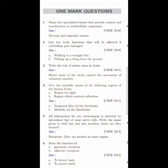Write the role of motor areas in the brain. Motor areas of the brain control the movement of voluntary muscles.